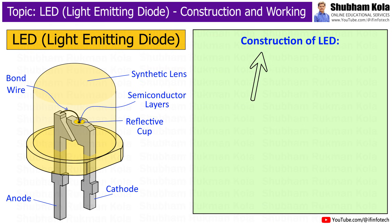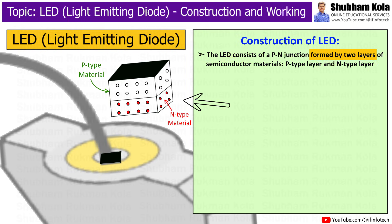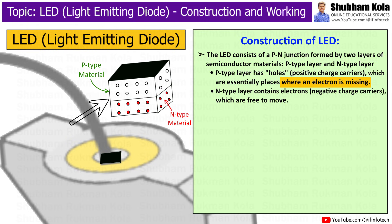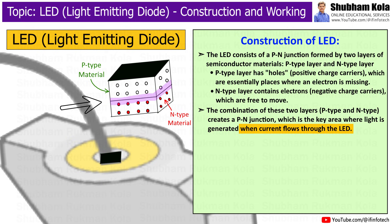Now let's talk about how the Light Emitting Diode is constructed. The LED consists of a p-n junction formed by two layers of semiconductor materials: the p-type layer and the n-type layer. The p-type layer has holes, i.e. positive charge carriers, which are essentially places where an electron is missing. The n-type layer contains electrons, i.e. negative charge carriers, which are free to move. The combination of these two layers creates a p-n junction, which is the key area where light is generated when current flows through the LED.